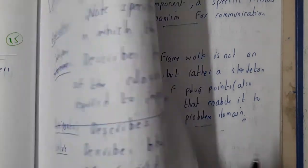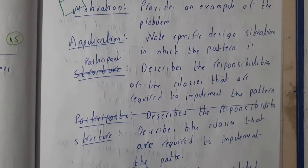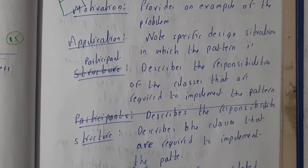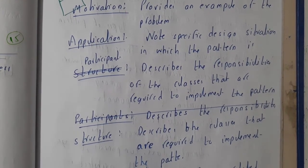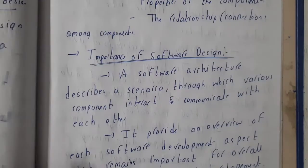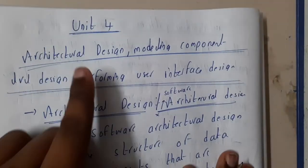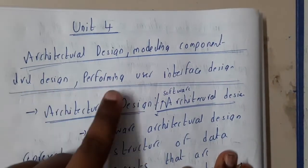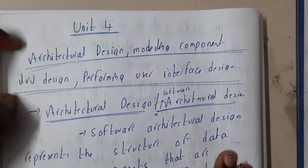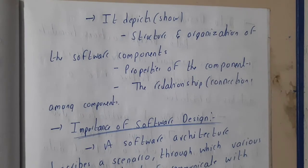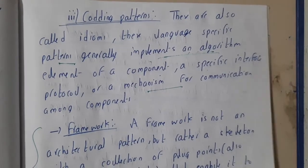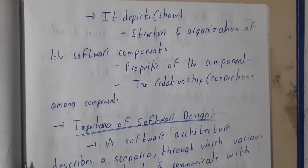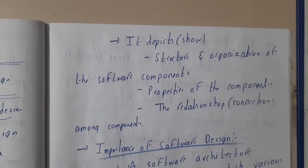That is all about the introduction to pattern-based software design. I hope everyone got some basic ideas about the design process. In the next unit we will be discussing architectural design, modeling components, and user interface. In the next lecture we will go through some important topics of the third unit and then move on to the fourth unit. Thank you for watching.